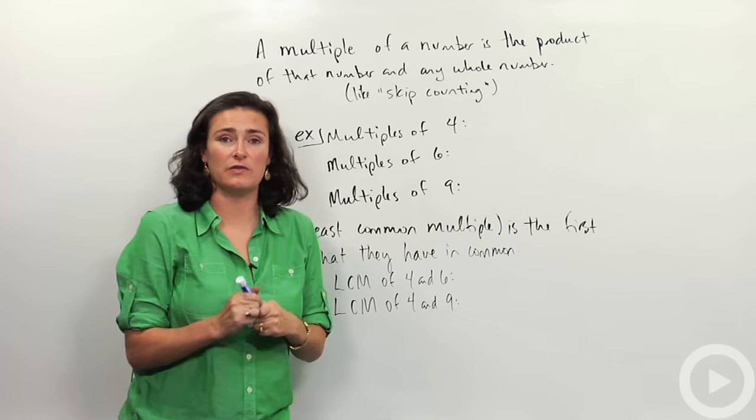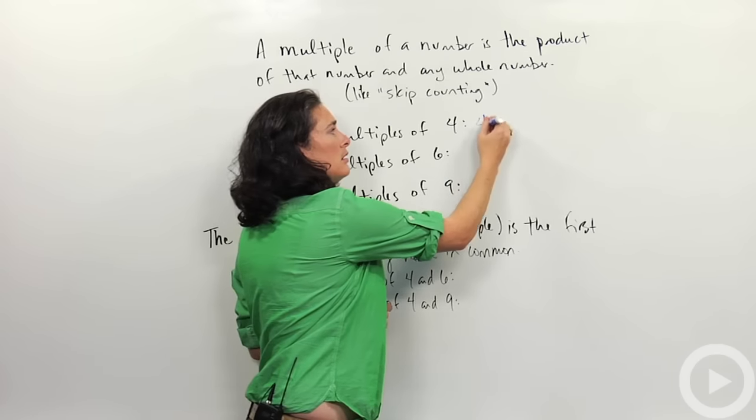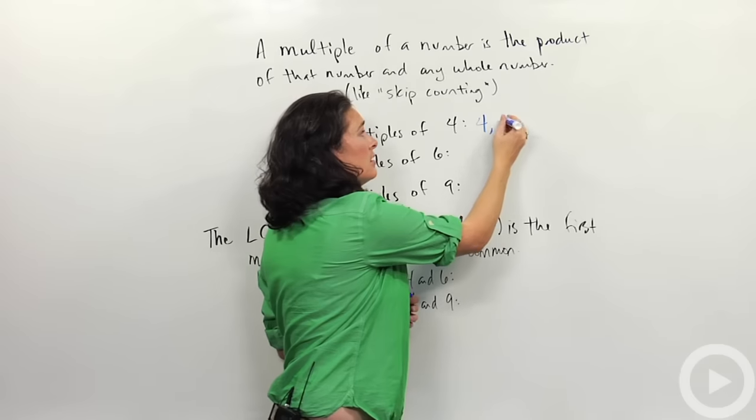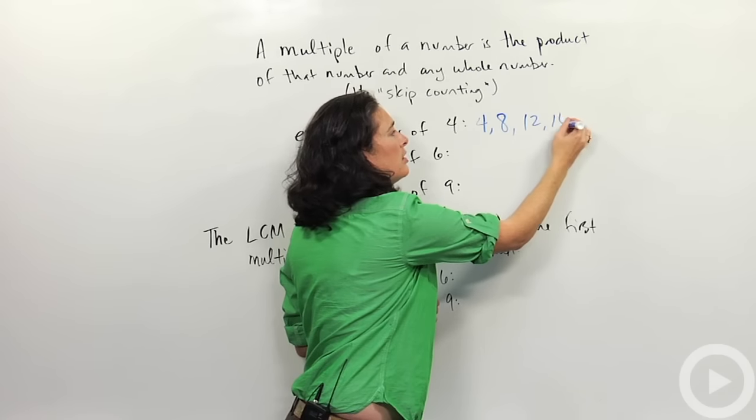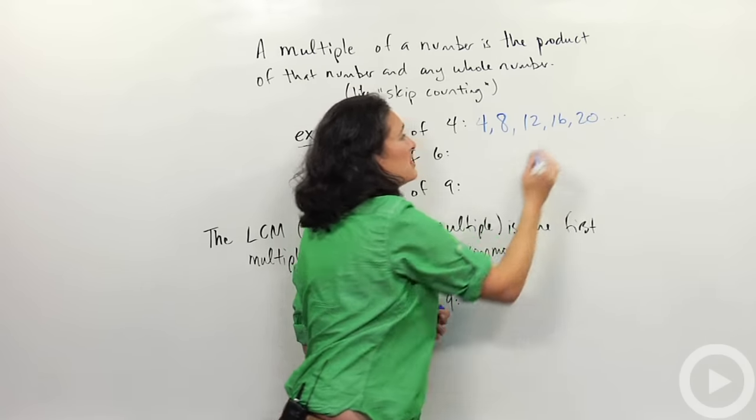like multiples of 4. I could do 4 times 1, 4 times 2, 4 times 3, 4 times 4, 4 times 5, on and on and on. You get the idea.